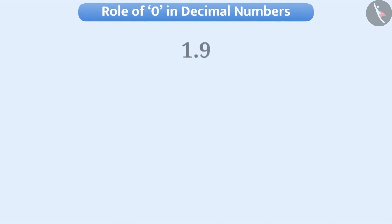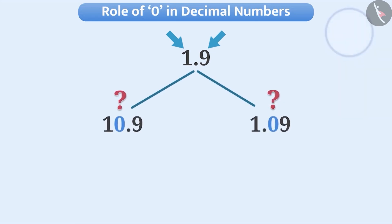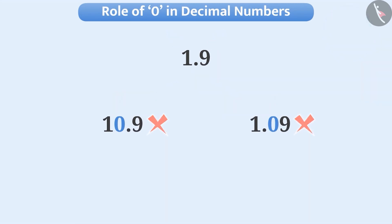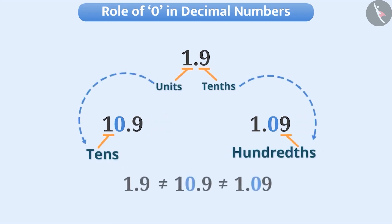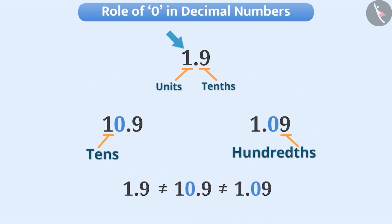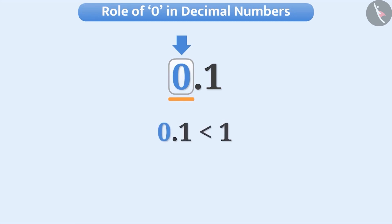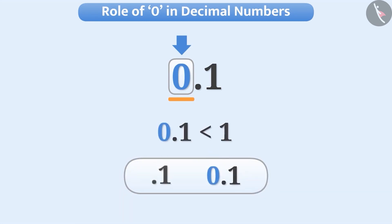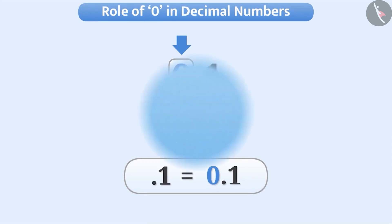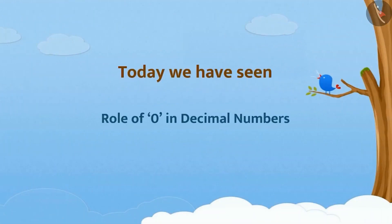We should not place zero in the middle between the first and last non-zero digit of any number, as this changes the value. In general, if there is no digit to the left side of the decimal point, we keep zero to the left of the decimal point — this represents that the number is smaller than 1. So whether we write 0.1 or .1, the value is the same. Today, we have seen the role of zero in decimal numbers.